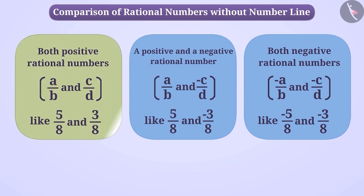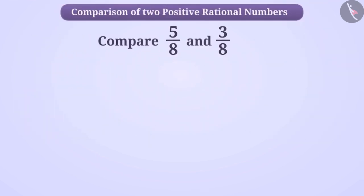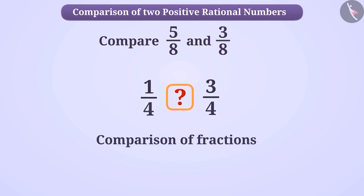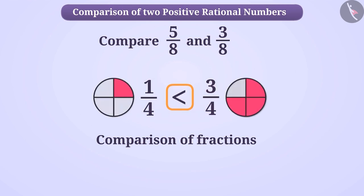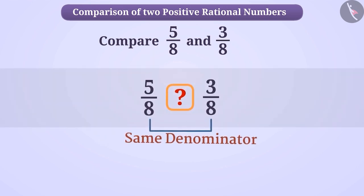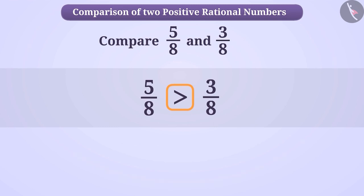First, we will see the comparison of two positive rational numbers. Do you remember how we compare fractions? Pause the video and think about it. The comparison of two positive rational numbers is done in the same way as the comparison of two fractions. That means, if the denominator of two rational numbers is the same, then the rational number having the greater numerator is greater. For example, both 5/8 and 3/8 have the same denominator, but the numerator of 5/8 is 5, which is greater than the numerator of 3/8, that is 3. Therefore, 5/8 is greater than 3/8.